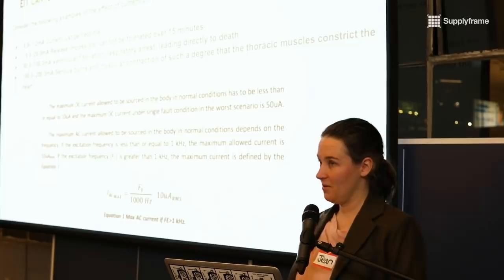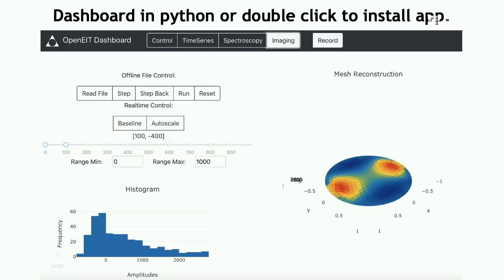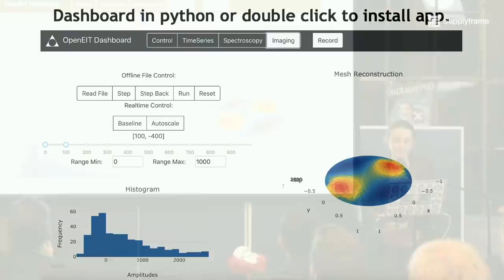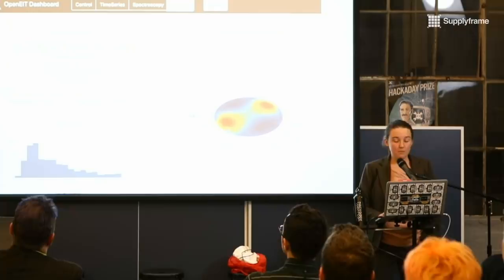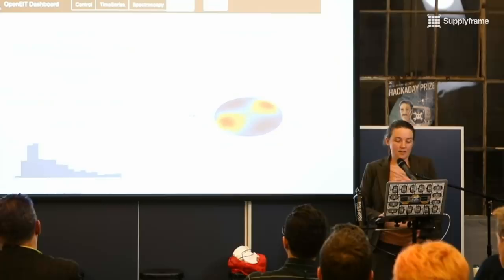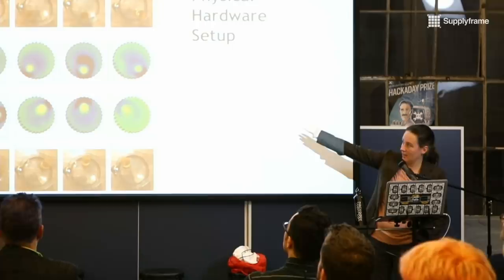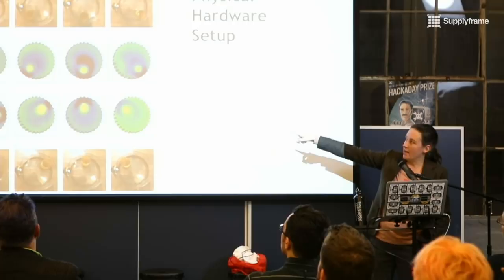This is what the dashboard looks like. It does a few different things — it does the imaging, which is the basic demonstration that you can do biomedical imaging in a really portable, small, very cheap way. It does spectroscopy and also gathers time series data. Here's an example of how it works: I've got a tank with a cup in it, I'm moving the cup around, and I'm localizing where the cup is only through current.